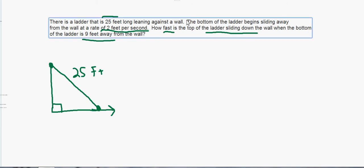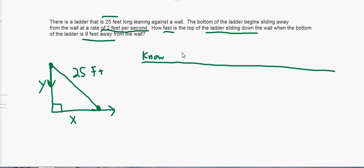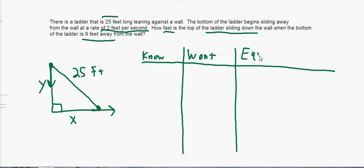Step three: put in everything that is changing — all the variables that matter. This side is changing because it's going down, and this side is also changing. Now we're going to create four categories — I usually put them in columns. The four columns are: what is everything we know, what do we want to know, what equations can we use to link these two concepts, and what's unknown in those equations.